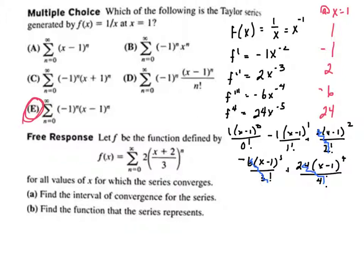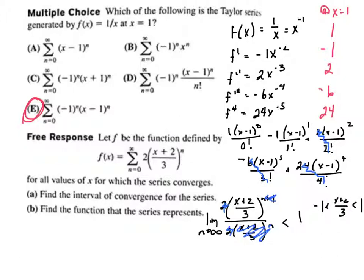The next one, let f be defined by the function. Find the interval of convergence. Well, we'd have 2x plus 2 cubed over n plus 1 over 2x plus 2 over 3 to the nth, and we need to do the limit as n approaches infinity. Well, the 2's cancel. This whole thing cancels with that. So we just need to know when x plus 2 over 3 is between 1 and negative 1. So multiply everything by 3, subtract 2.